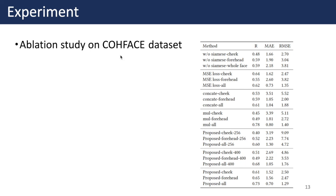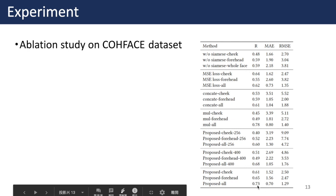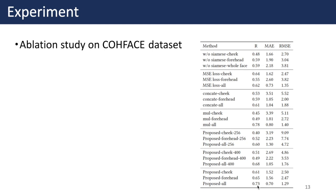When using only one branch of the network to process one facial region, the Pearson correlation coefficient is about 0.48, 0.59, and 0.59. With the proposed Siamese RPPG network, we significantly improve the performance to 0.61, 0.65, and 0.73. The improvement can also be seen from the reduced MAE and RMSE. These results verify that by training under the proposed Siamese network, we successfully learn the homogeneity and heterogeneity of the two ROIs. We also replaced the negative Pearson loss with mean square error loss, which enforces amplitude closeness but does not reflect the goal of learning the periodic trend, leading to worse results.